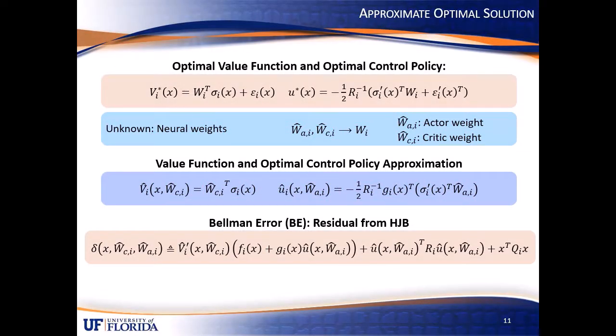Each value function can be approximated with a separate single layer neural network, which is represented as W_i transpose times sigma_i. However, since the weights of the neural network W are unknown a priori, we are motivated to use two separate sets of weights, the actor and critic weights, which are used to approximate the optimal controller and optimal value function, respectively. Our overall control objective is to approximate the ideal weights W with the actor and critic weights, which will subsequently regulate the state x to zero. The Bellman error delta is an indirect residual from optimality that is used to update the actor and critic weights online.